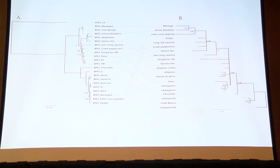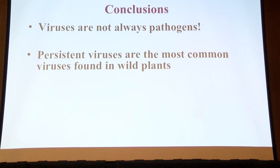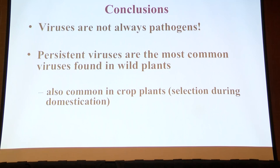To wrap up: I only showed you one story about beneficial viruses, but I hope you know they're not all pathogens. Persistent viruses are the most common viruses found in wild plants, also very common in crop plants and probably selected during domestication. Some appear to be mutualistic.